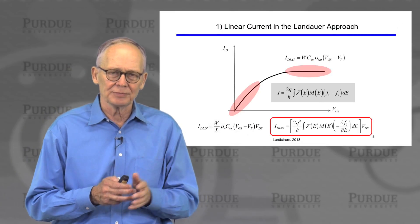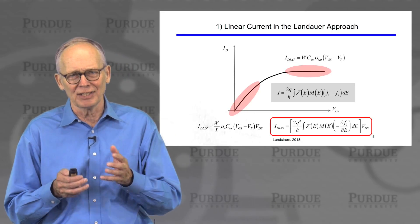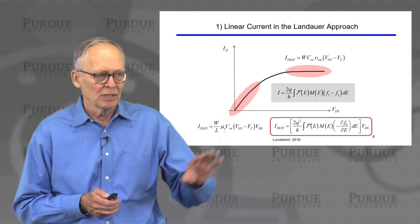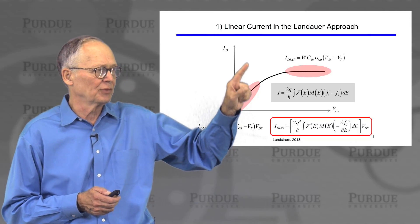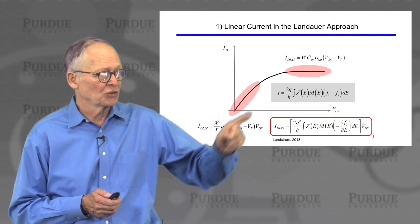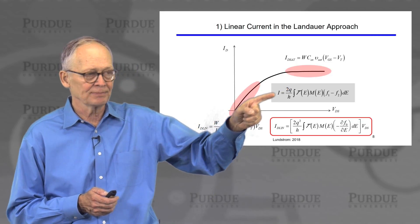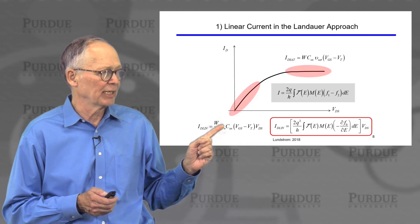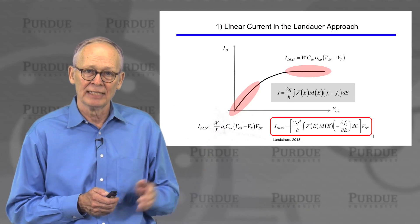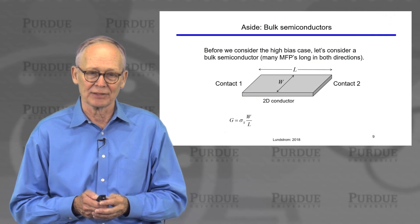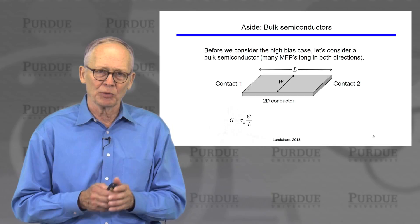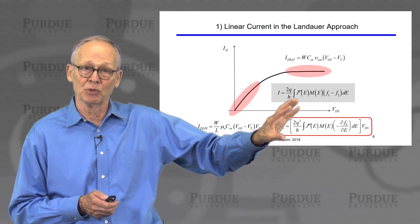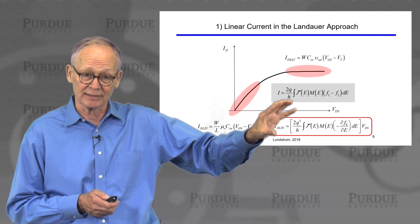Now we'll shift. We're going to consider a number of channels large enough that we don't see the discrete conductance steps, and we're going to evaluate the current in the linear regime. We take our general expression, simplify it for low bias, and see if we can replace the traditional expression with something more suitable at the nanoscale. We will work that out in the next lecture.